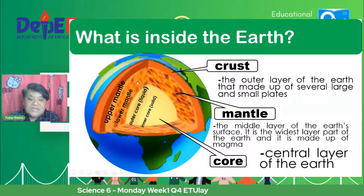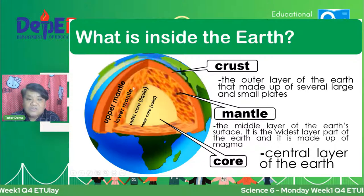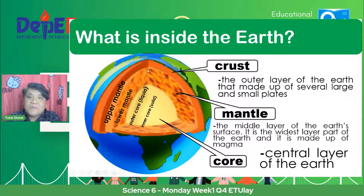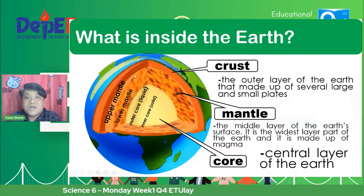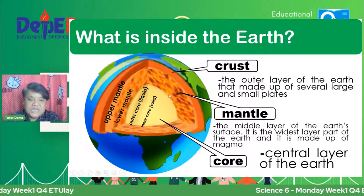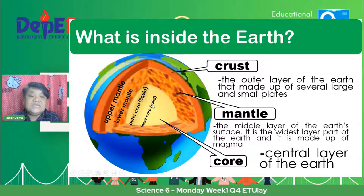Mapalik tayo sa mantle. Dito natin makikita yung magma — ito yung mga liquid materials na pag lumabas sa mundo, magiging rocks at magiging soil. Yung mga magma na ito, liquid siya, sobrang init niya. So that is the mantle. These are the three parts inside the Earth.